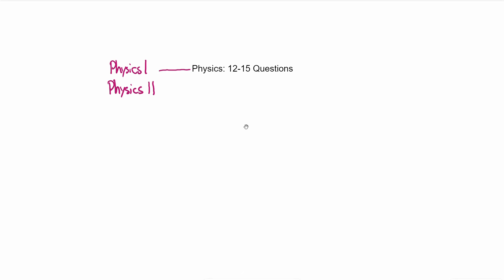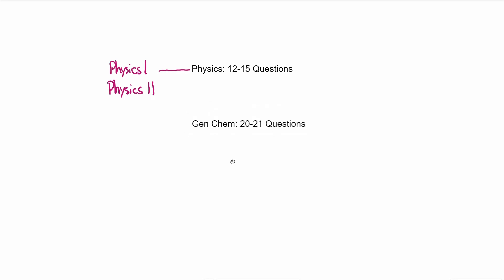Next, we've got general chemistry, sometimes known as gen chem. I would estimate that gen chem accounts for about 20 to 21 questions on the MCAT — a lot more than physics. Gen chem at most universities is also represented by two classes: Gen Chem 1 and Gen Chem 2. So far, we've got four classes that you've got to take.